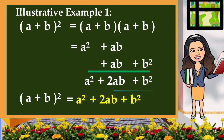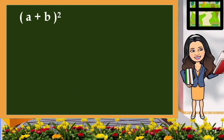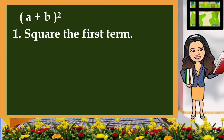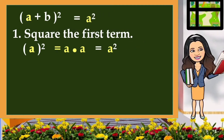Let us have another solution for that. So let us have the square of the quantity a plus b. I'm going to give you the three steps in finding the square of this binomial. The first step is: square the first term. We have a as the first term, so we are going to multiply a by itself. A times a is equivalent to a squared, and that is the first term of the result.